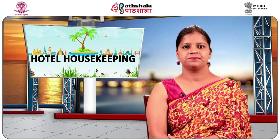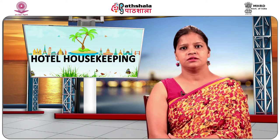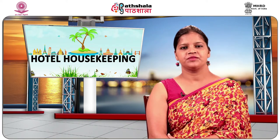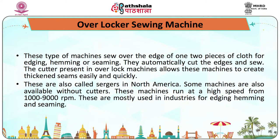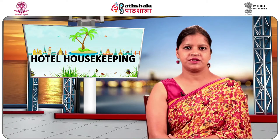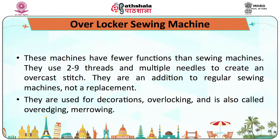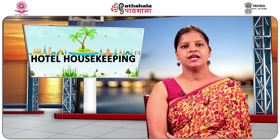Overlocker machines sew over the edge of one or two pieces of cloth for edging, hemming or seaming. They automatically cut the edges and sew. The cutter in the overlocker machine allows them to create thickened seams easily and safely. These are also called sergers in North America. Some machines are available without cutters. They run at high speeds from 1000 to 9000 RPM, are mostly used in industries, use 2 to 9 threads and multiple needles to create an overcast stitch, and are an addition to regular sewing machines, not a replacement.